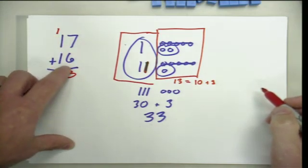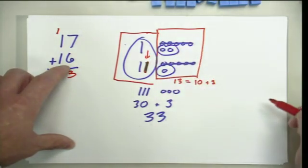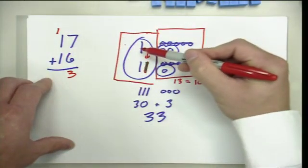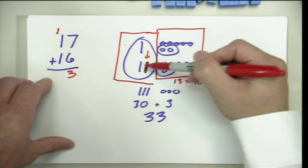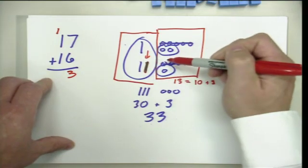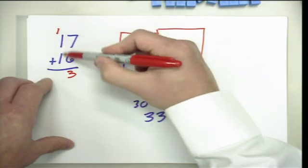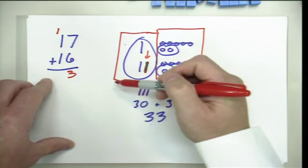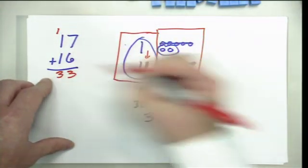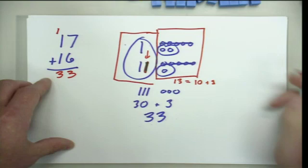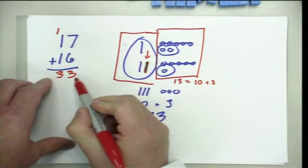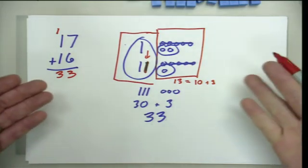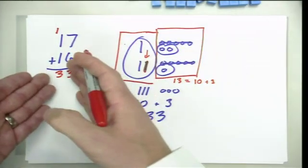That carry reminds us that we have an extra group of 10 from our set of ones — that's what we drew in our representation. Now we put all of our tens together just like we did before: we had 2 tens that we started with and that 1 ten we were able to form from our group of ones. So now I can see I have 3 tens, and I write that 3 in the tens place — understanding that as 3 tens and 3 ones, or the value 33. That's one way to connect the representation to the abstract work students are doing.